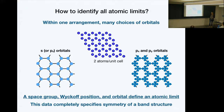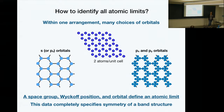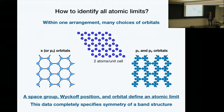The second piece of information needed to identify an atomic limit is the orbital on each site — basically what's the degree of freedom. For example, on the honeycomb lattice we can have either s orbitals or pz orbitals, which have the same symmetry under the honeycomb symmetries, or we can talk about mixing px and py orbitals. These degrees of freedom — the space group, the Wyckoff position, and the orbital — are the data that define the atomic limit. Importantly, this data completely specifies the symmetry of the band structure.